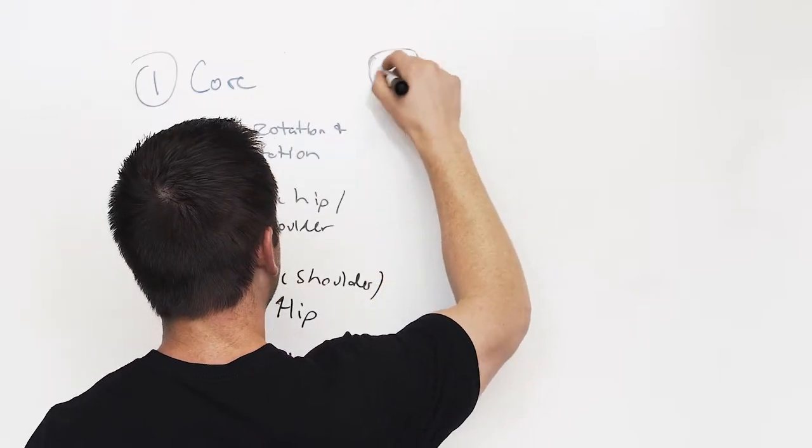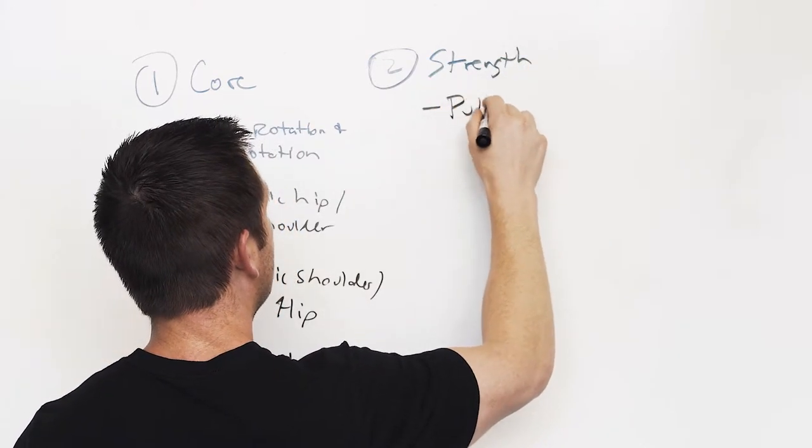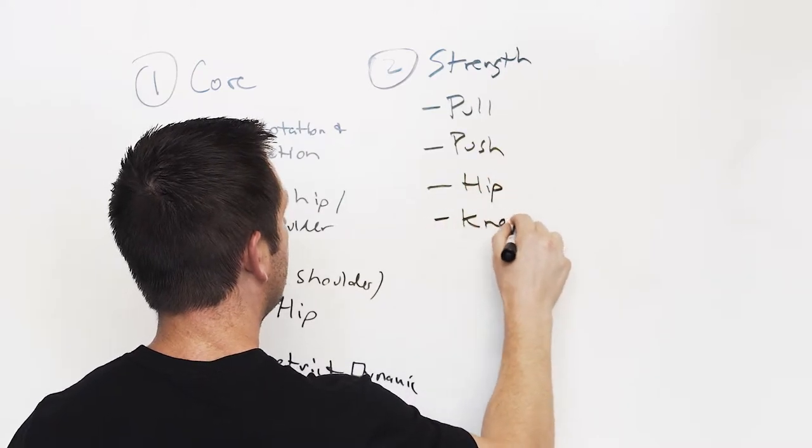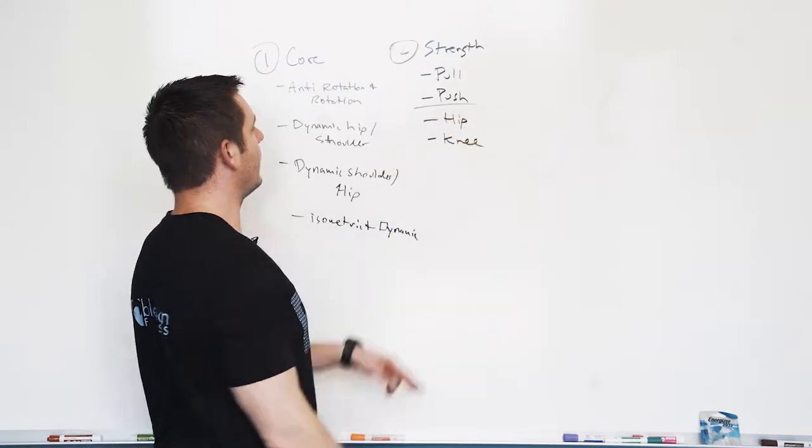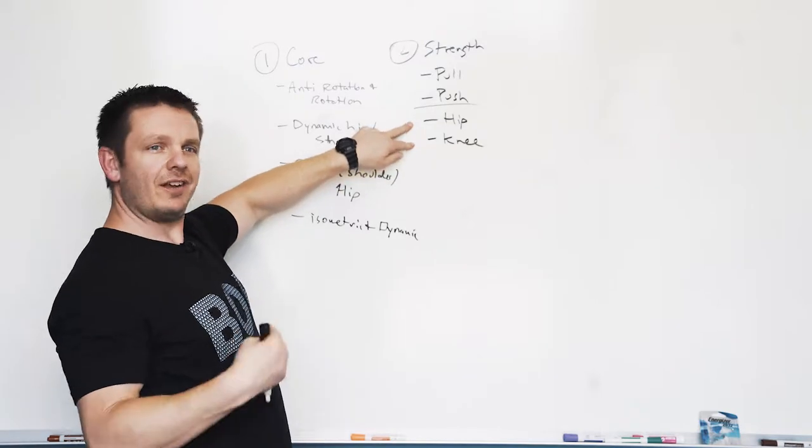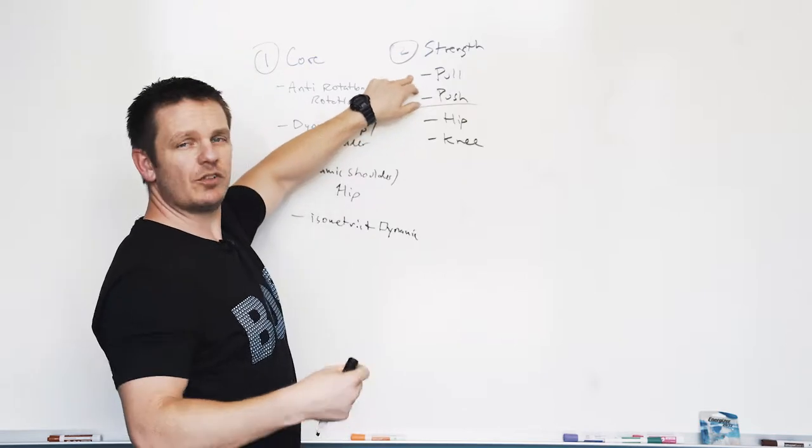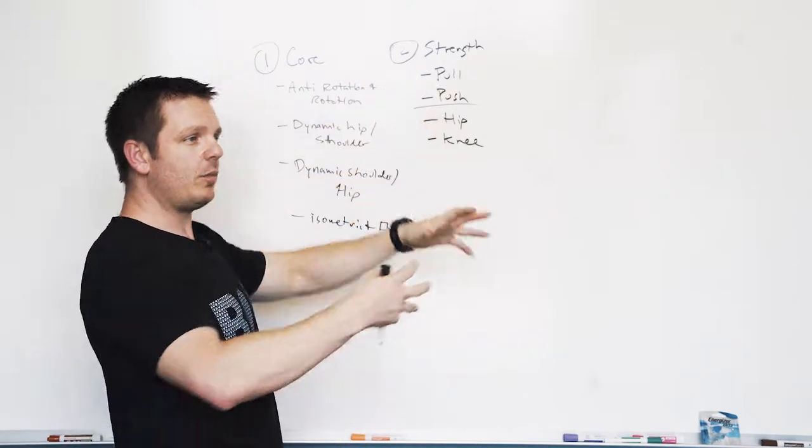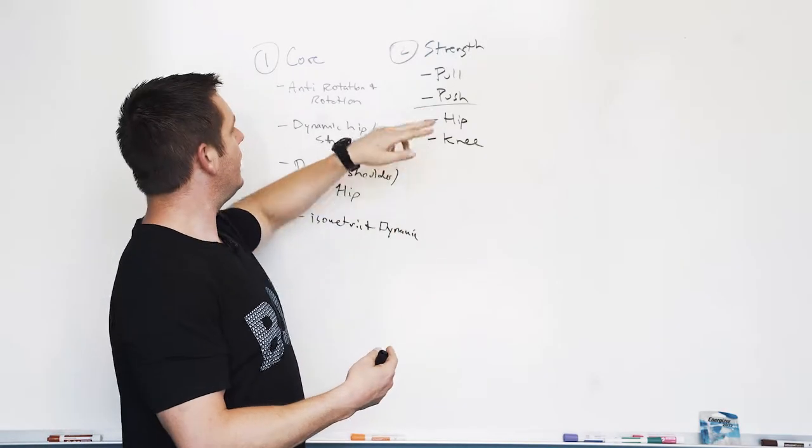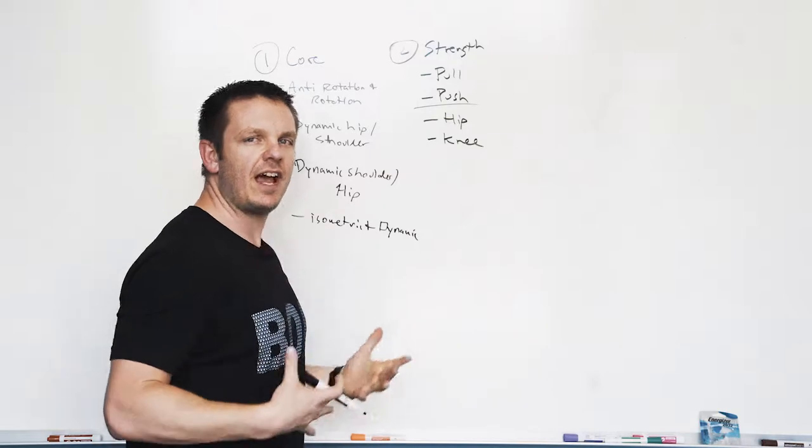Our second pillar is our strength. Strength exercises fall into four buckets, two working on the upper body, two on the lower body. Our pulling movements work the posterior side of the upper body, like dumbbell rows, cable rows, or pull-ups. The pushing movements would be any sort of push-up or overhead press targeting the anterior side of the upper body.